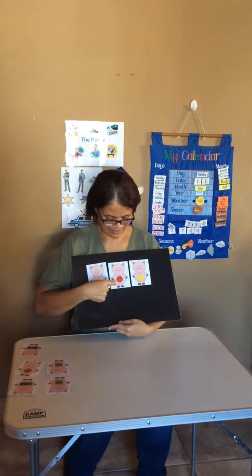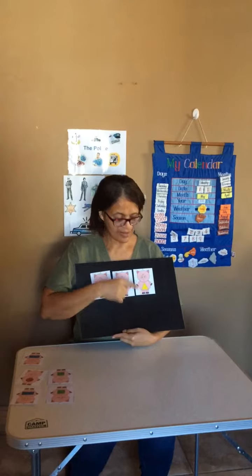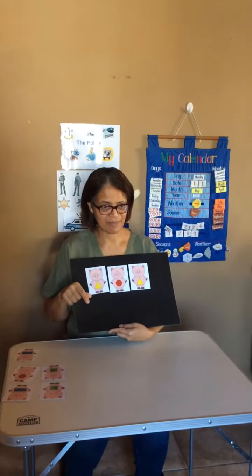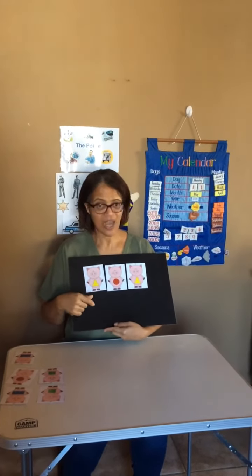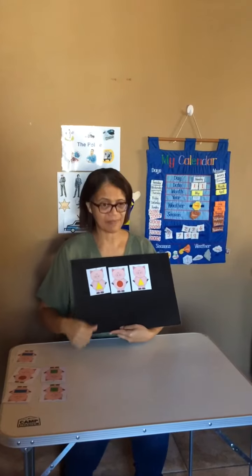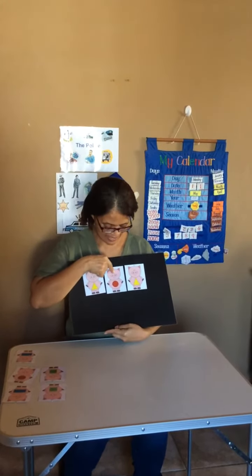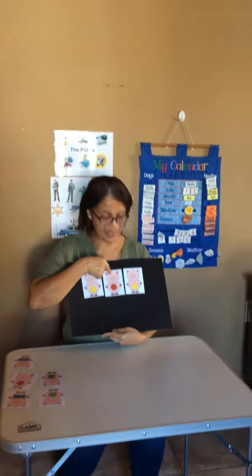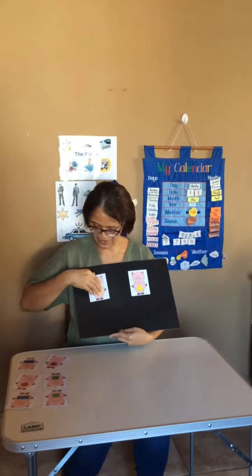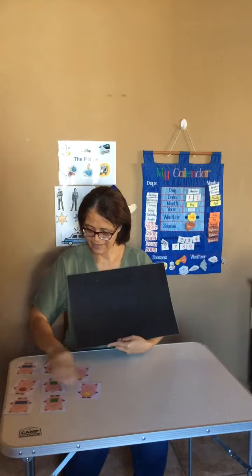Triangle, circle, triangle. Which shape is the odd one out? Does it look the same? The circle in the middle. Yes, well done. You are so clever. Right, let's try another one.